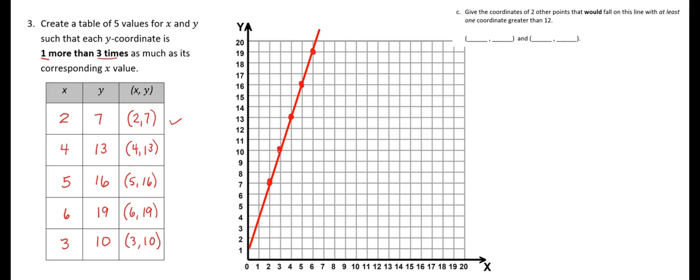For our final question, we're going to give coordinates of two other points that would fall on this line, with at least one coordinate greater than 12. Just like we did in the question before, we're going to follow the pattern of the x, y coordinates to predict other points that the line would cross if we were able to extend it. The pattern is that the y-coordinate is one more than three times as much as the x-coordinate. So I'm going to choose 7 — 7 times 3 is 21, plus one more would be 22. And then we could choose 8 — 8 times 3 is 24, plus one more would be 25. So if we were able to extend this graph, these points would also fall on that line.